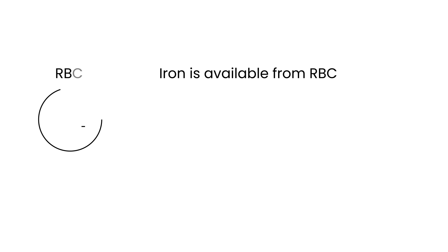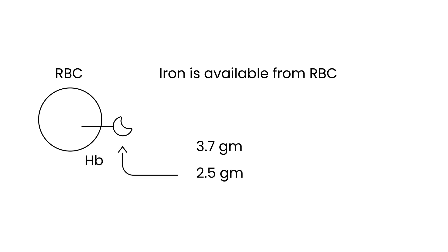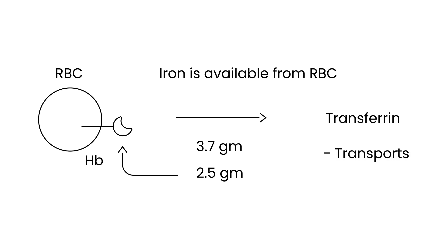When the body needs iron, it gets it from the storage form, but it can also get it from aging red blood cells. Remember, 2.5 grams of iron are inside the hemoglobin molecule. When these red blood cells die, transferrin grasps those iron molecules and transports them throughout the body. The 'T' in transferrin stands for transport.